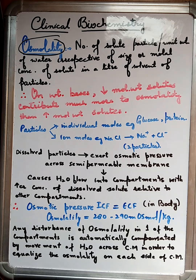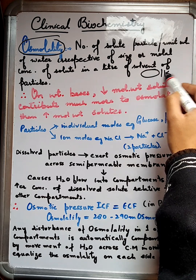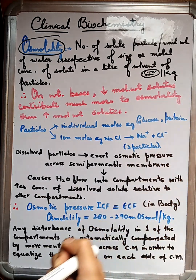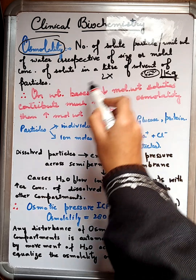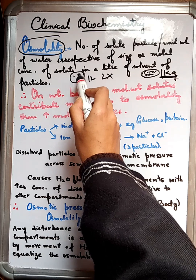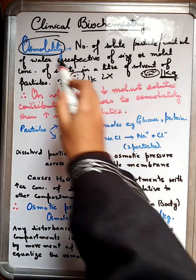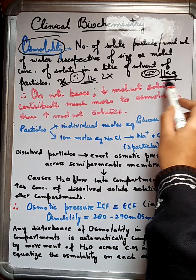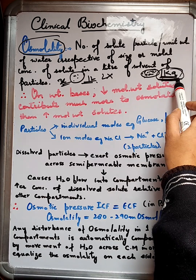Let's first understand what osmolality means. If we are taking 1 kg of water, how many solute particles are present here is known as the osmolality. Here we are concerned with kg, not with liters. If we say that 1 liter of water contains 36 particles of solute, we won't call it osmolality — it will be osmolarity. But here we are taking into consideration the concentration of water in terms of weight, so it's known as osmolality.